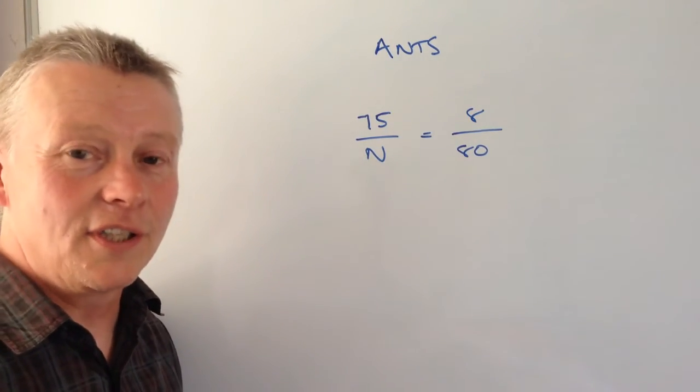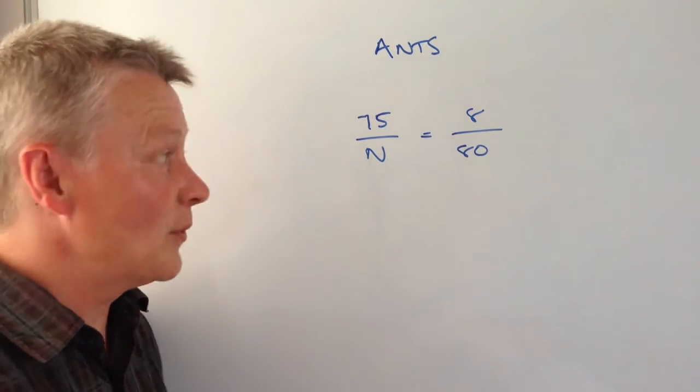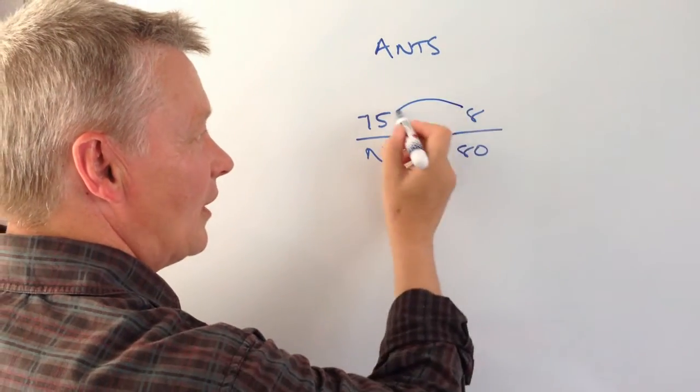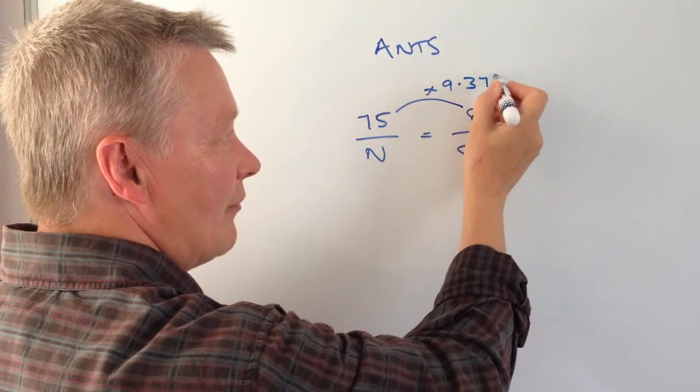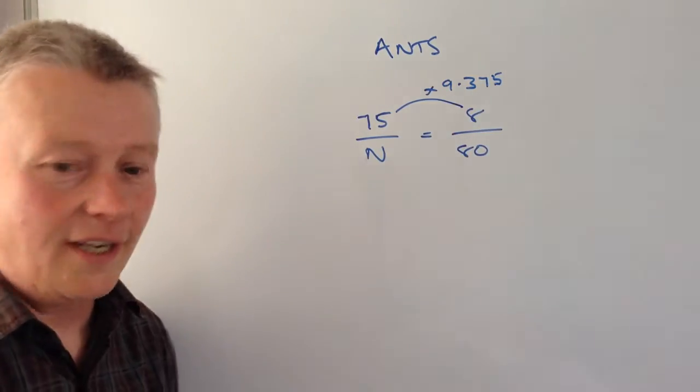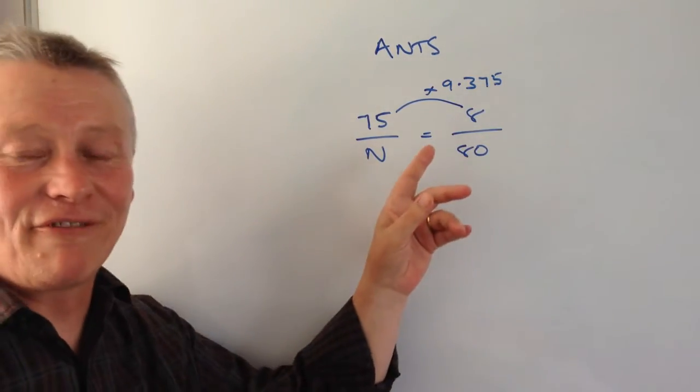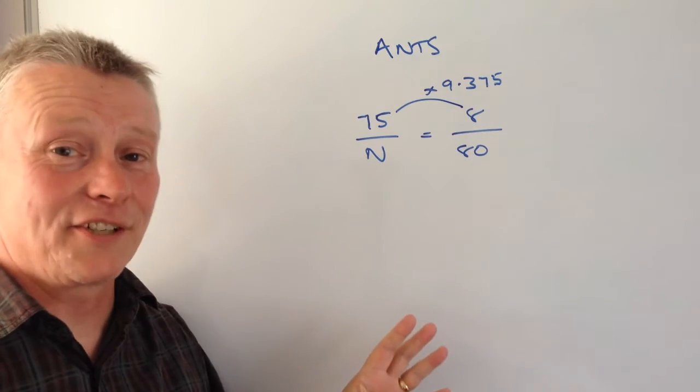So really it's just a question now of equivalent fractions. What we're saying is if I multiply this eight by I think 9.375, yep, 9.375. Now you will need a calculator for that.